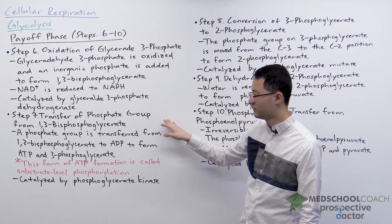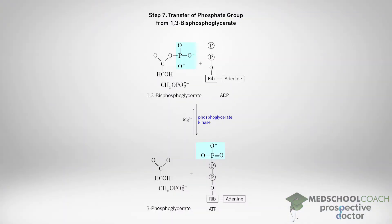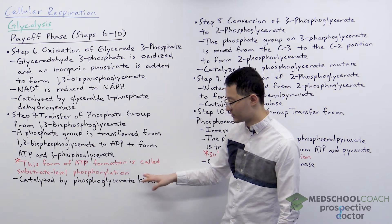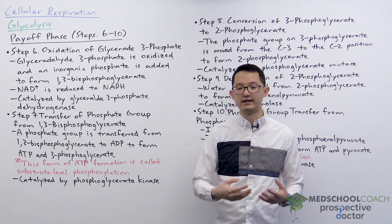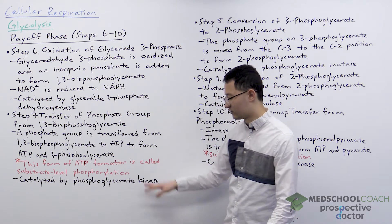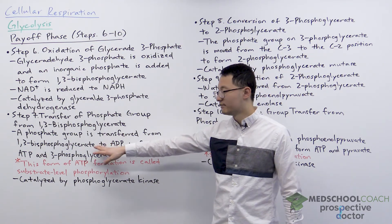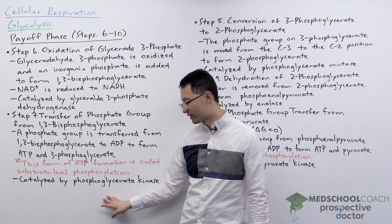Step seven is the transfer of a phosphate group from 1,3-bisphosphoglycerate. One of the phosphate groups is transferred to ADP to form ATP and 3-phosphoglycerate. This ATP formation is called substrate-level phosphorylation, distinguishing it from ATP formation via the electron transport chain and chemiosmosis. Since we're transferring a phosphate group from one molecule to another, the enzyme catalyzing this reaction is a kinase — specifically, phosphoglycerate kinase.